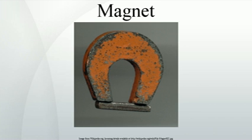However, a version of the magnetic pole approach is used by professional magneticians to design permanent magnets. In this approach, the divergence of the magnetization M inside a magnet and the surface normal component Mn are treated as a distribution of magnetic monopoles. This is a mathematical convenience and does not imply that there are actually monopoles in the magnet. If the magnetic pole distribution is known, the pole model gives the magnetic field H. Outside the magnet, the field B is proportional to H, while inside, the magnetization must be added to H.